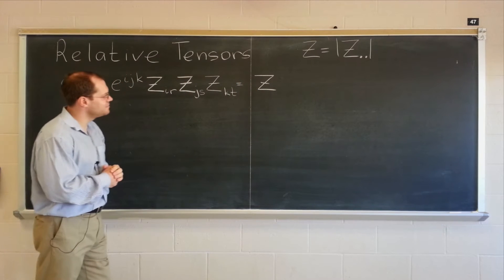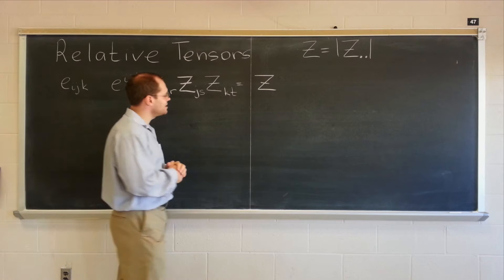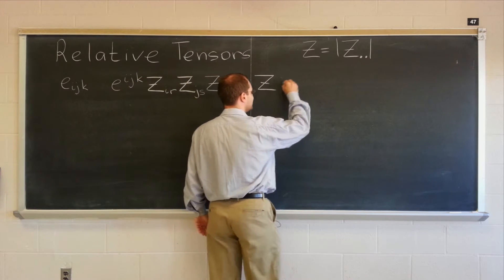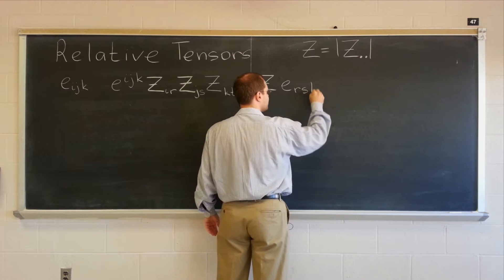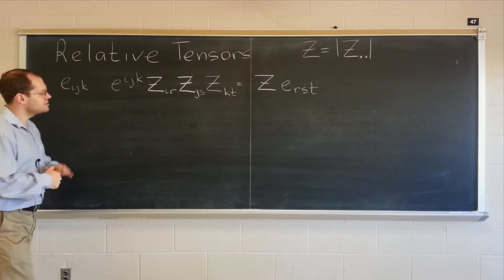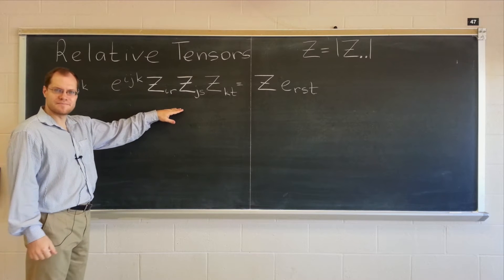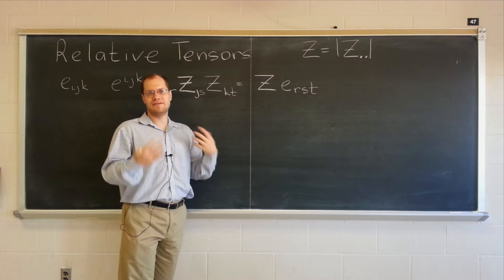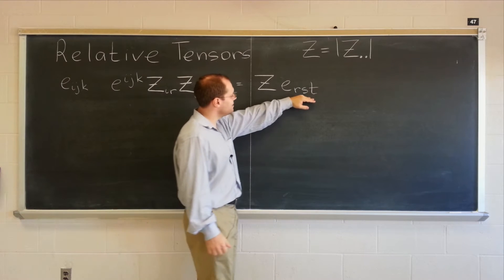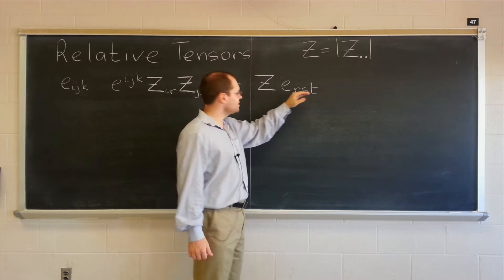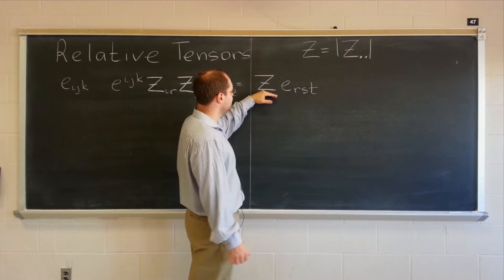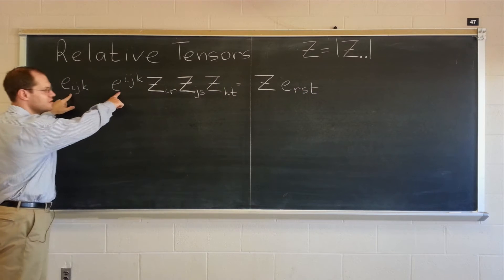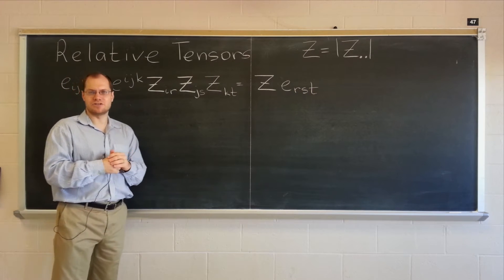So that's the definition of Z. Perhaps almost the last time that Z is used to denote some kind of object. Z times ERST. So I would say we were hoping, in order for the index juggling formalism to remain valid, we were hoping that the answer would just be ERST. But no, it equals Z times ERST.